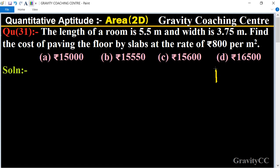In this question, the length and breadth of the room are given: 5.5 meters is the length and 3.75 meters is the breadth. Therefore, area of the room equals length times breadth, which equals 5.5 multiplied by 3.75.